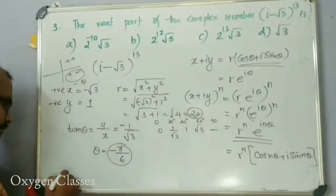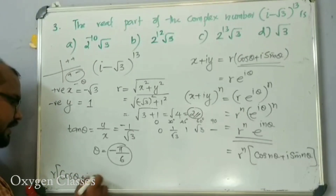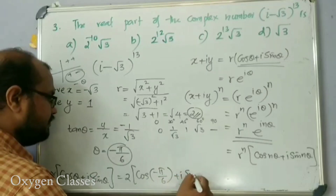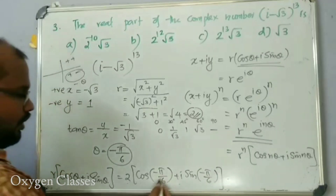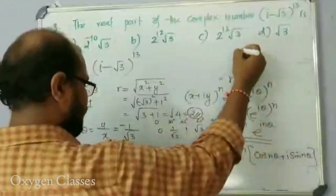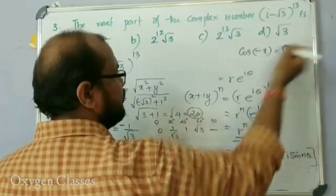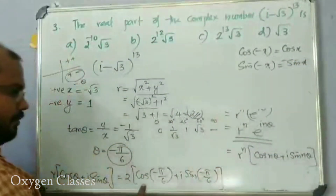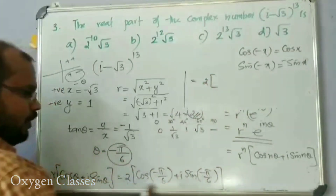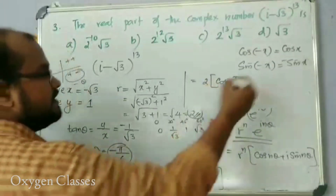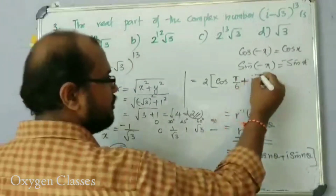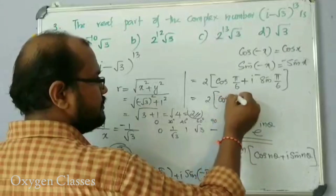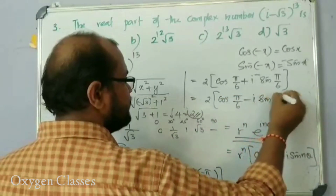Writing in polar form: 2 into (cos(minus 5 pi by 6) plus i sin(minus 5 pi by 6)). Since cosine is an even function, cos(minus x) = cos(x). Since sine is an odd function, sin(minus x) = minus sin(x). So this becomes 2 into (cos(5 pi by 6) minus i sin(5 pi by 6)).